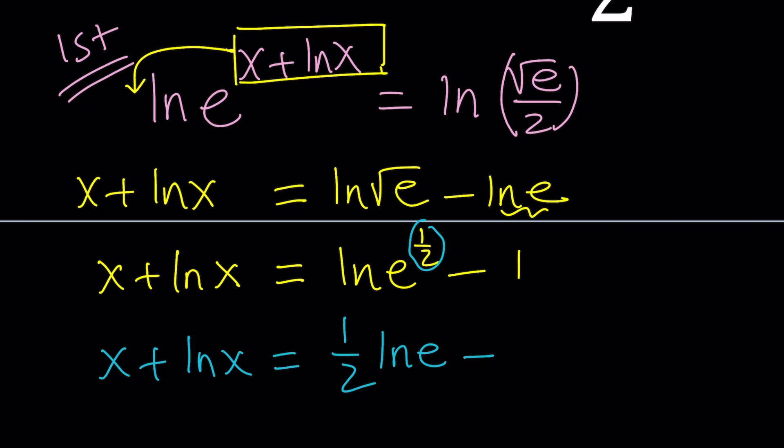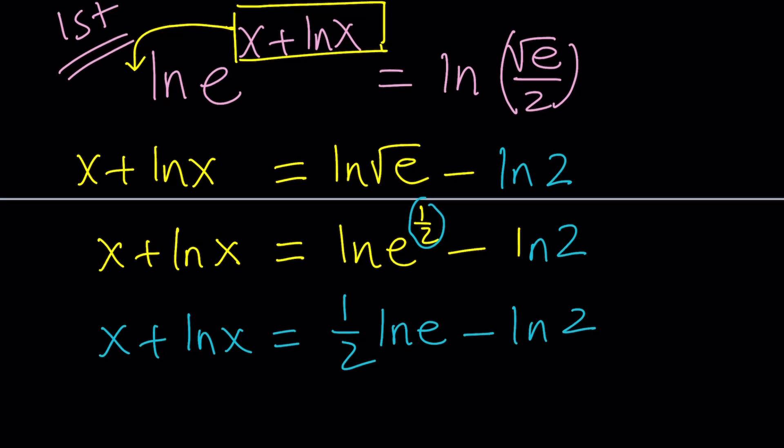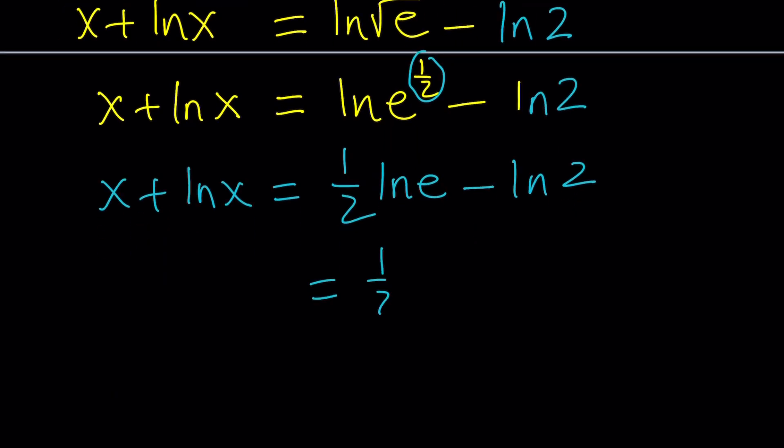So we have this one-half power so let's move that. x plus ln x equals one-half ln e minus—okay, there is a mistake here. This is not supposed to be ln e, that's supposed to be ln 2. ln e is 1 so we can write this as one-half minus ln 2 which is equal to x plus ln x.